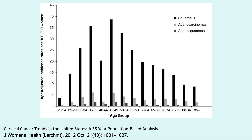Adenocarcinoma of the uterine cervix overall is less common than squamous cell carcinoma across all age groups. You can see the squamous cell carcinomas are those black bars, ranging from patients in this study aged 20 to 85 plus. The light gray bar is adenocarcinoma, and then adenosquamous carcinoma, always less common across all age groups than squamous cell carcinoma.